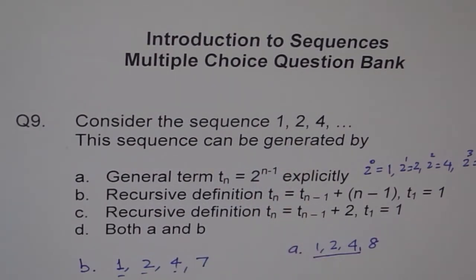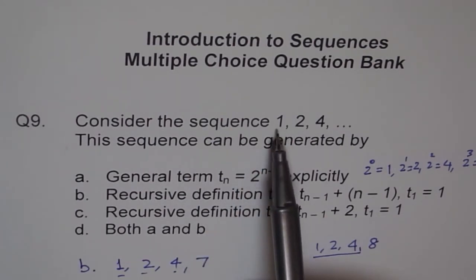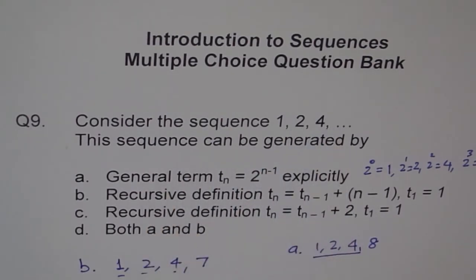One important thing I want to show you is that we can never be sure about the next number in a sequence if we are not sure about our general formula or the recursive definition. If I just give you a sequence like 1, 2, 4, then the fourth term could be either 7 or 8 or something else, depending on what was generating that sequence. So given few terms, the next term could be optional, could be different.